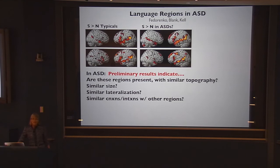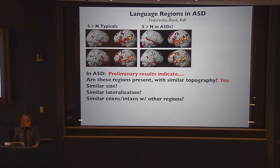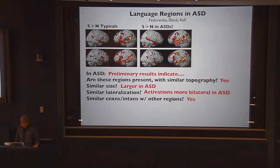To summarize: we're still collecting subjects — I think given the heterogeneity, 20 subjects isn't enough and 30 is a bare minimum. These basic systems are present with more or less the same topography in high-functioning people with autism. They are even larger in autism, more bilateral, less lateralized, and seem to show similar interactions with other regions.